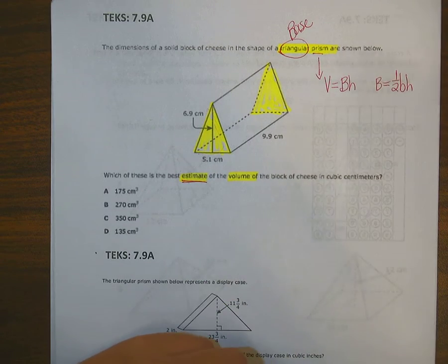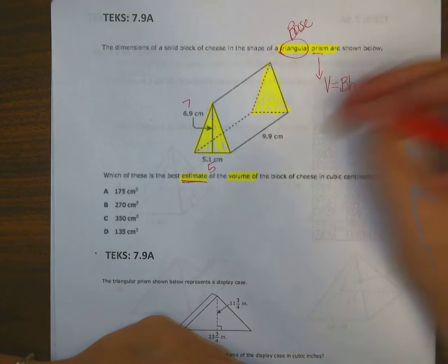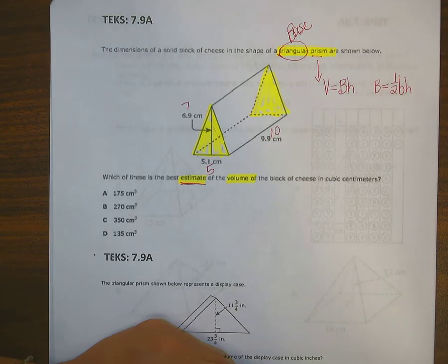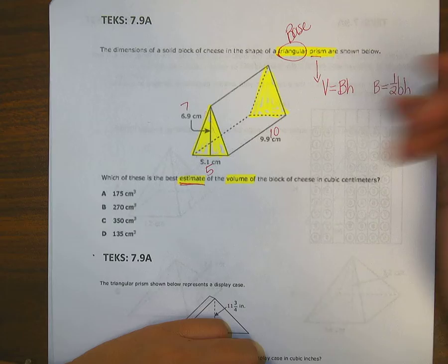Okay, now because I'm estimating, I'm changing this to a 7 and I'm changing that to a 5. You know why? Because I can. And this is going to be 10. Estimate means change these numbers so that they're familiar and easy to work with.